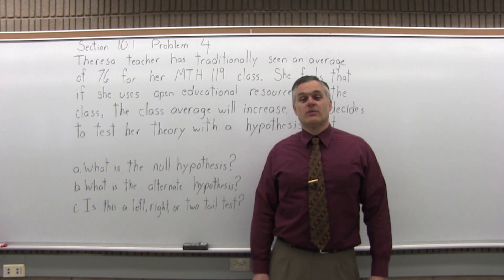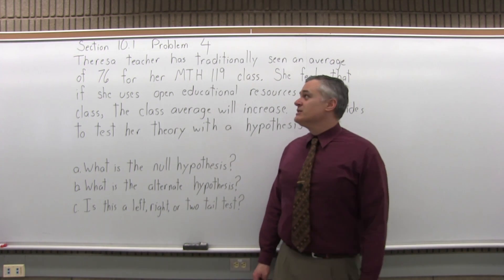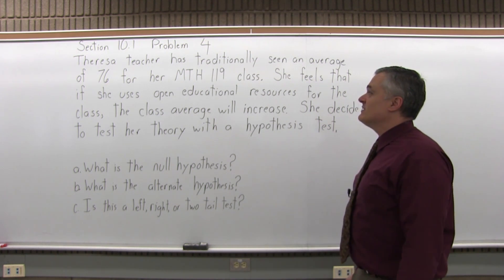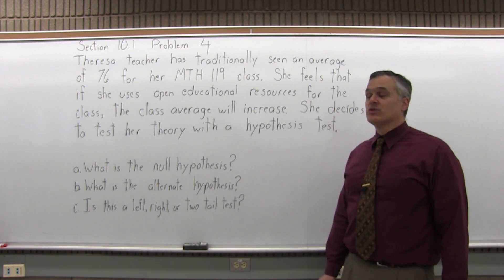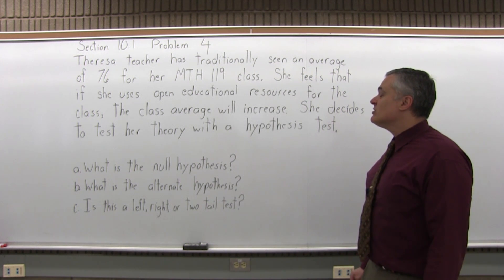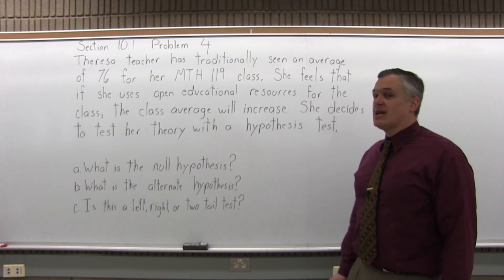This is Section 10.1, Problem number 4. It says Teresa Teacher has traditionally seen an average of 76 for her Math 119 class. She feels that if she uses open educational resources for the class, the class average will increase. She decides to test her theory with a hypothesis test.